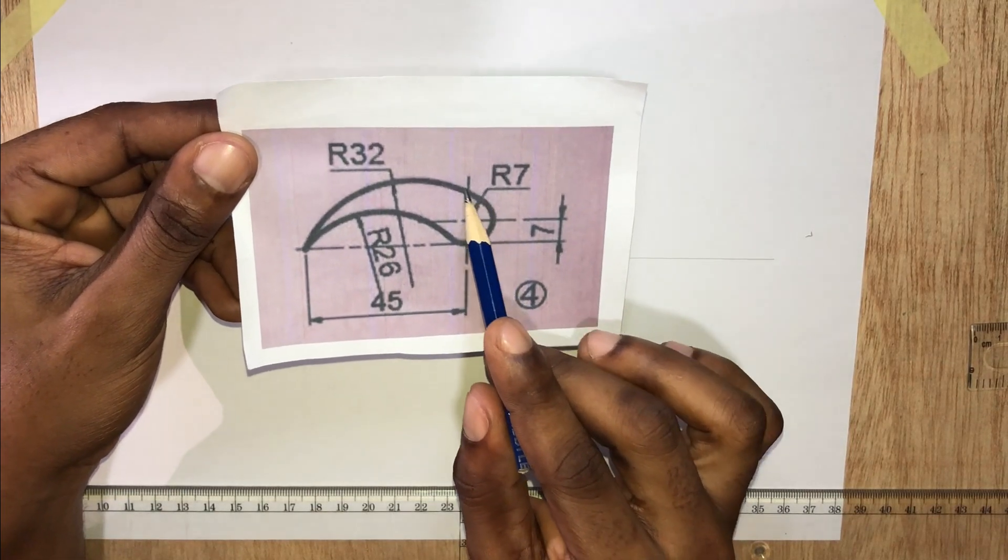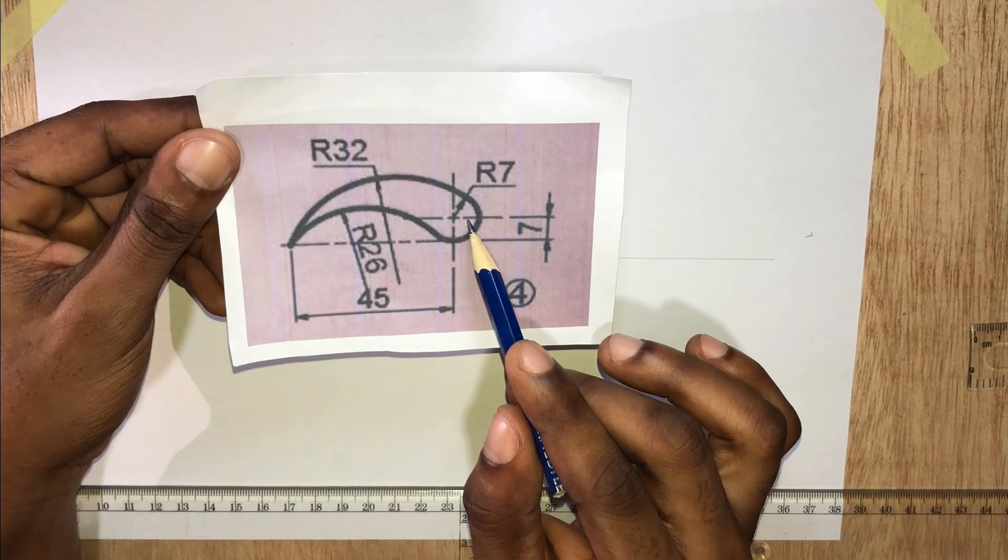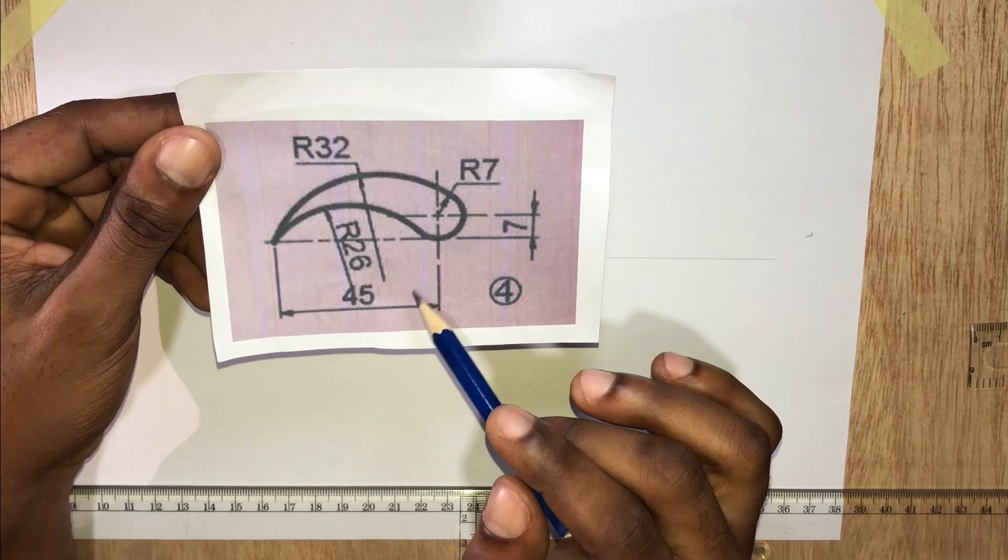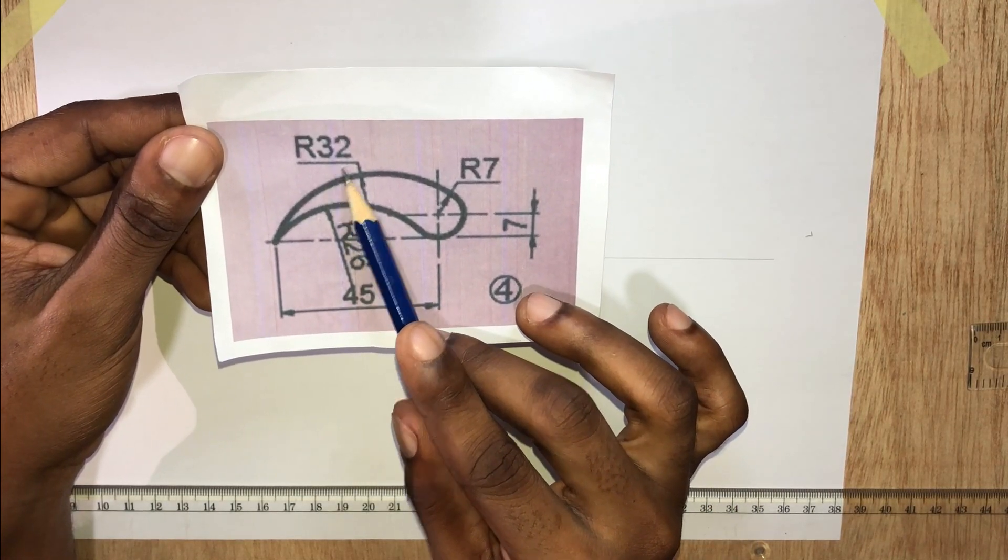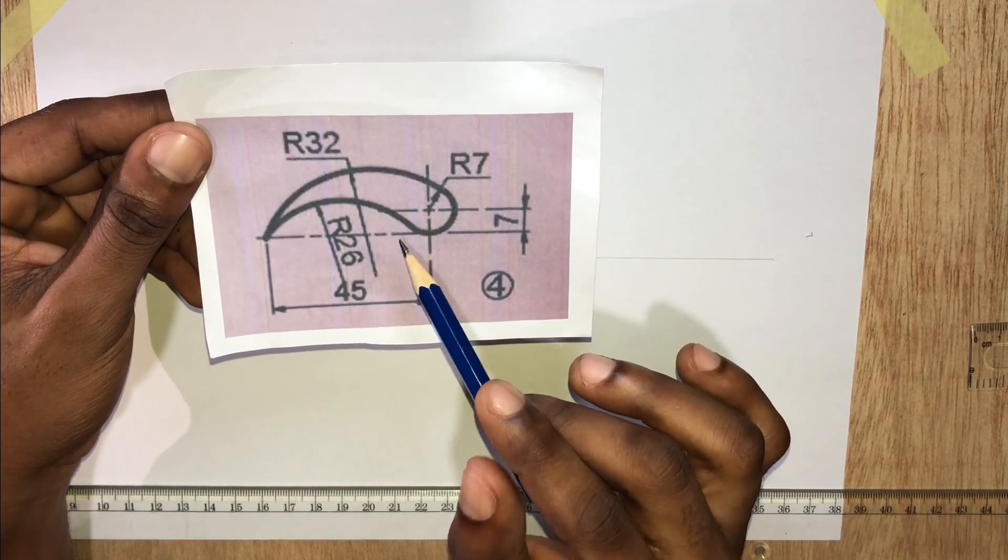Now we have a big circle here, which is internal to this circle. So we would subtract the radii. Note it's having a radius of 32 millimeters. So 32 minus 7 will give us 25 millimeters.